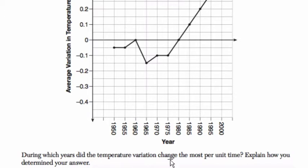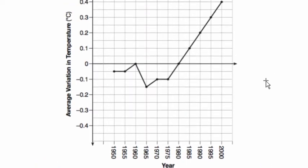During which years did the temperature variation change the most per unit time? Explain how you determined your answer. They're essentially asking, where is the slope in this graph the steepest? And you might be able to see it,